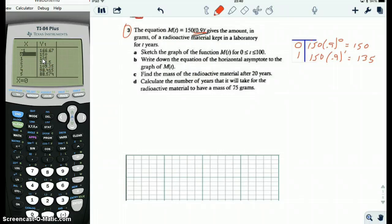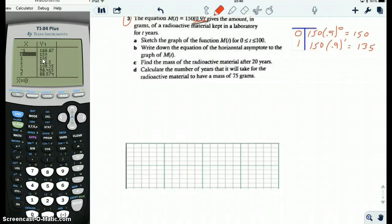First, it asks us to sketch the function between 0 and 100. So we'll do that here. We'll say this is 0, this is 100. At 0, it's 150. So we'll say that this is 100 and this is 150. And so, what would it be at 50 years? Let's look at that. So maybe we'll get an intermediate value like at 25 or so.